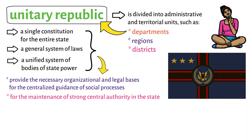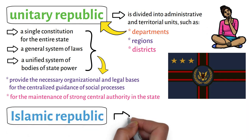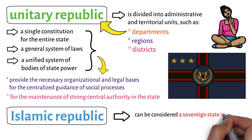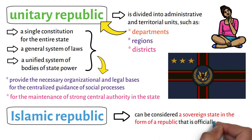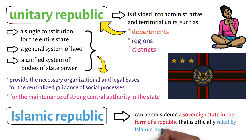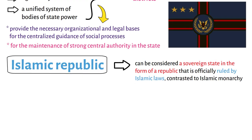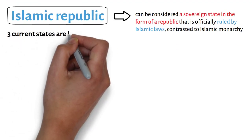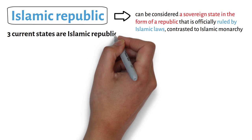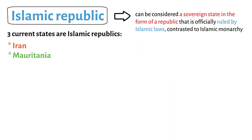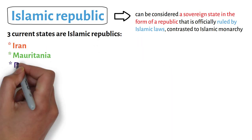Lastly, an Islamic republic can be considered a sovereign state in the form of a republic that is officially ruled by Islamic laws, contrasted to Islamic monarchy. As a name or title, three current states are Islamic republics: Iran, Mauritania, and Pakistan.